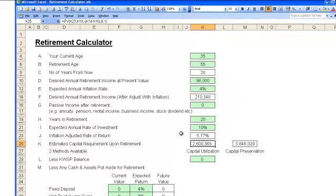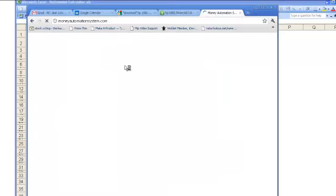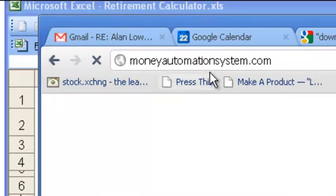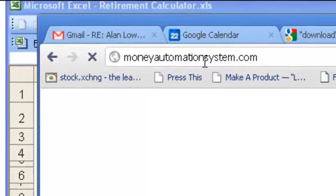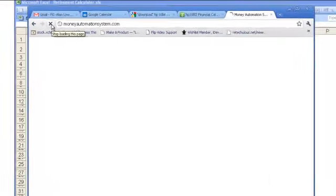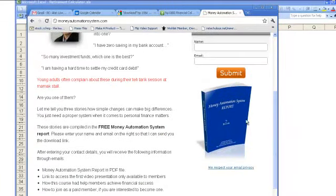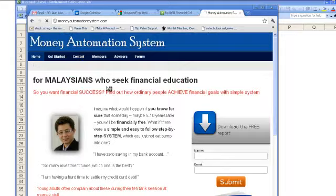If you want a copy of this retirement calculator, I only provide it to members of my course, Money Automation System. To know more about this course, please visit moneyautomationsystem.com—that's M-O-N-E-Y, automation A-U-T-O-M-A-T-I-O-N, system S-Y-S-T-E-M dot com. You can download a free report, but if you want to join right away, just click on the content and you'll find a join link.